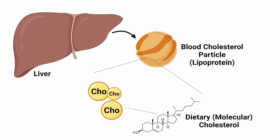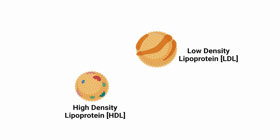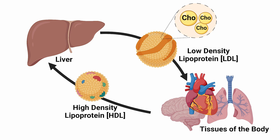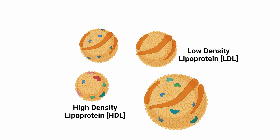Blood cholesterol, on the other hand, is really a particle that can contain dietary cholesterol. It is primarily produced by the liver, but can also be generated in other areas of the body. These cholesterol particles or packages come in different shapes and sizes, some being larger and smaller, as well as more dense or less dense. Low-density lipoprotein is a type of cholesterol particle that circulates through the bloodstream and delivers dietary cholesterol, along with other molecules, to the various tissues of the body. High-density lipoprotein is also a type of cholesterol particle that circulates from the tissues and delivers dietary cholesterol back to the liver. There are also other types, like very low-density lipoproteins and intermediate-density lipoproteins, but we'll be focusing on the two mentioned.